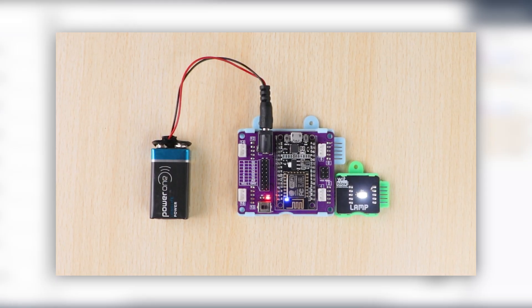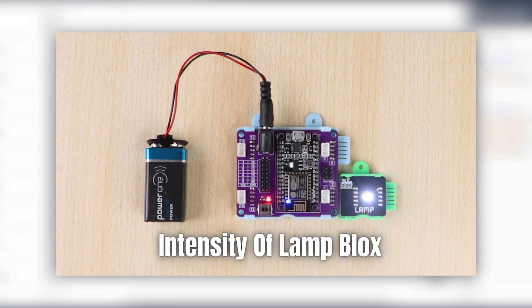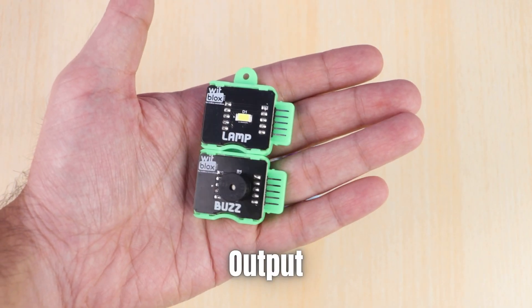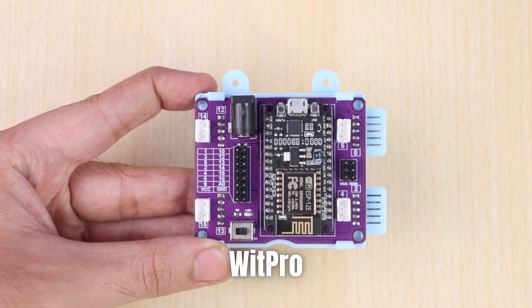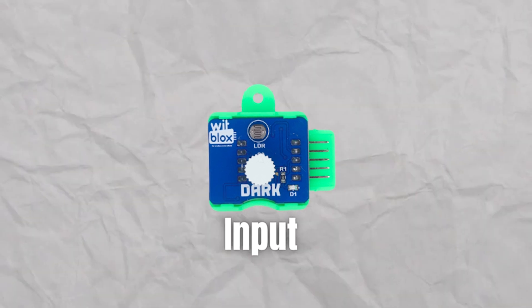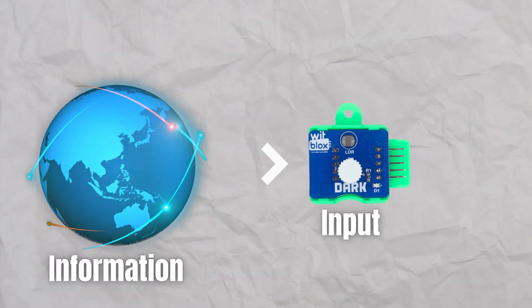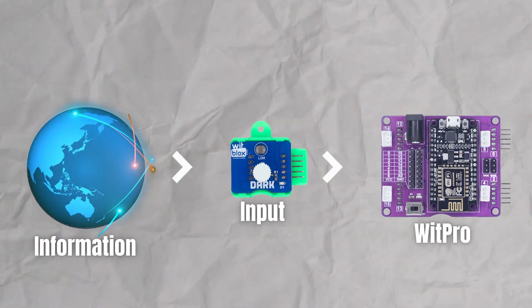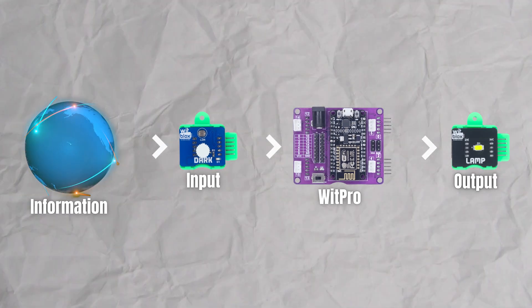In the previous video we learnt how to control the intensity of the lamp blocks using VidPro. In this video we will learn how to control an output via an input using VidPro. Input blocks help us gather information about the outside world, and with VidPro we can use this information to control the outputs.